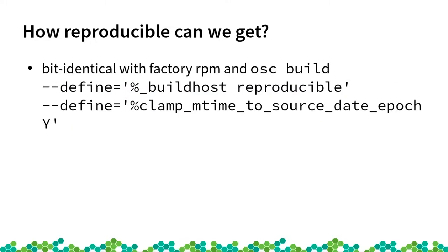Last year the state was that I was able to build one package twice and it produced identical results. This year I built 9,000-something of our 11,000 Factory packages and they produced identical results. So that's quite good.